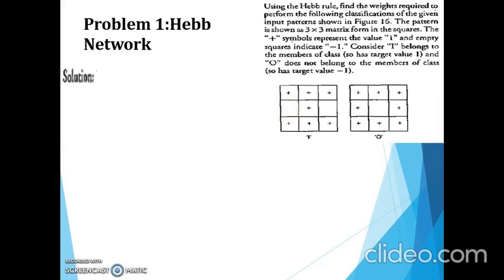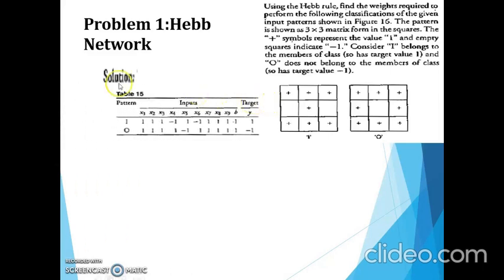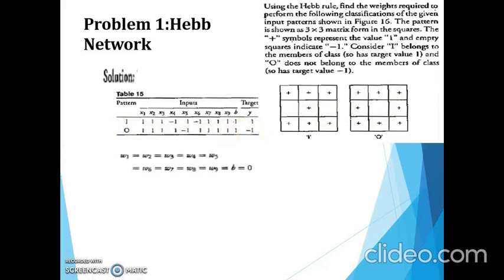Now we consider the same thing in tabular format. Inputs are from 1 to 9 because it is a 3×3 grid. Except the 4th and 6th locations, all other values are positive because those locations are empty, so I represent them with -1. Target is +1. For 'o', except the 5th location, all are having positive values and the target is -1. We have to update the weight — calculate the change of weight. We initialize all weights with 0 value, and also the bias. We have 9 inputs, each carrying a separate weight w1, w2, and so on up to w9.